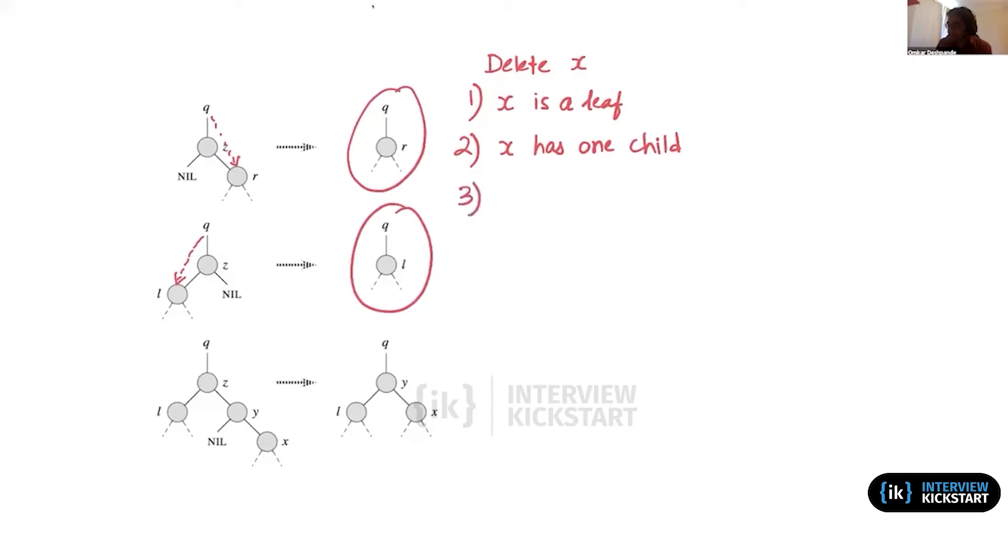The most complex case was when the node that we were trying to remove has two children. When it has two children, let's say we want to remove this particular z here. Notice that it has a left child as well as a right child.